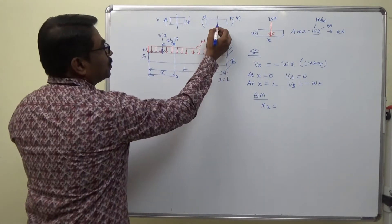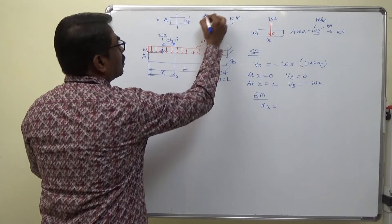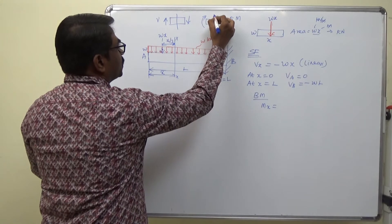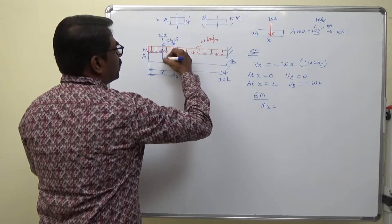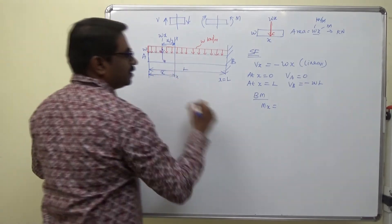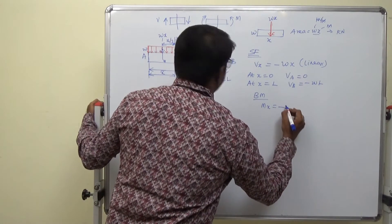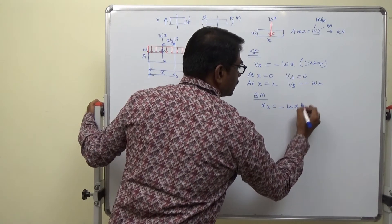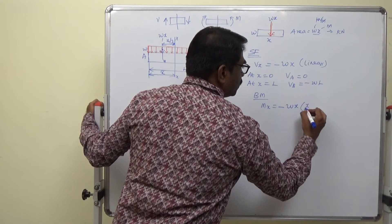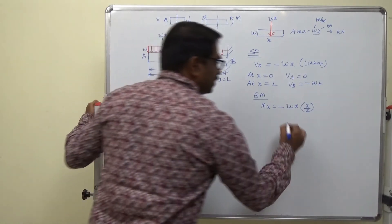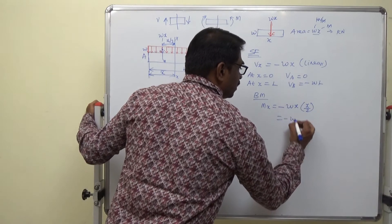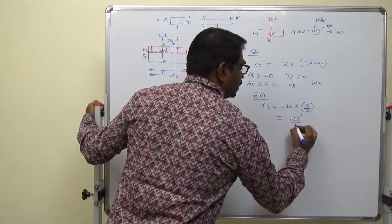The perpendicular distance is x by 2. To the left, clockwise is positive. It is going to produce anti-clockwise moment. So negative W x by 2. Negative W x into x by 2 is the perpendicular distance, so minus W x square by 2.